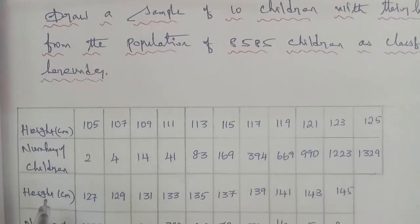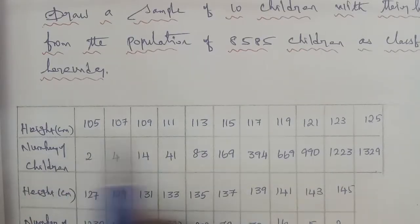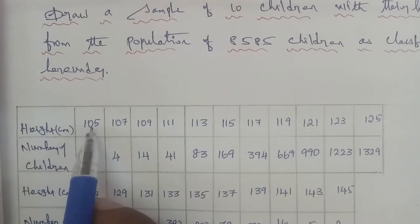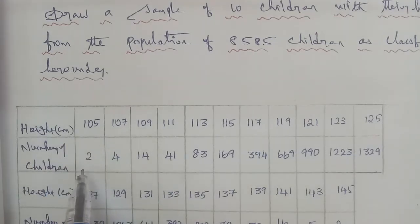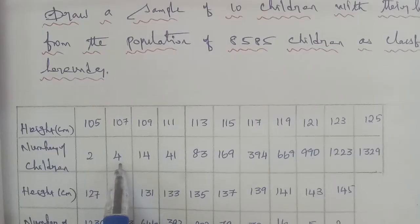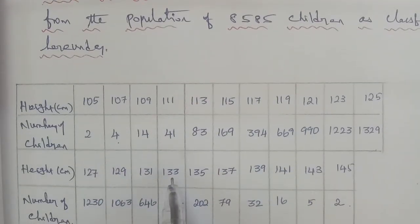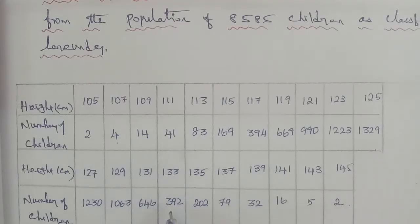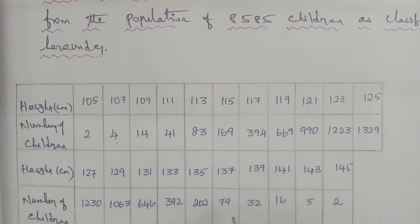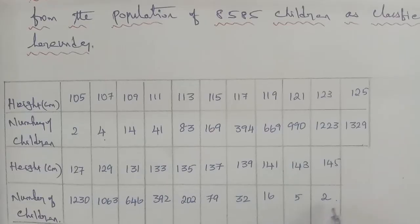We will look at the number of children. So, 105cm height has 2 children, and 107cm has 4 children. The height of 133cm has 392 students, and 137cm height has 79 students. And 145cm has 2 children.